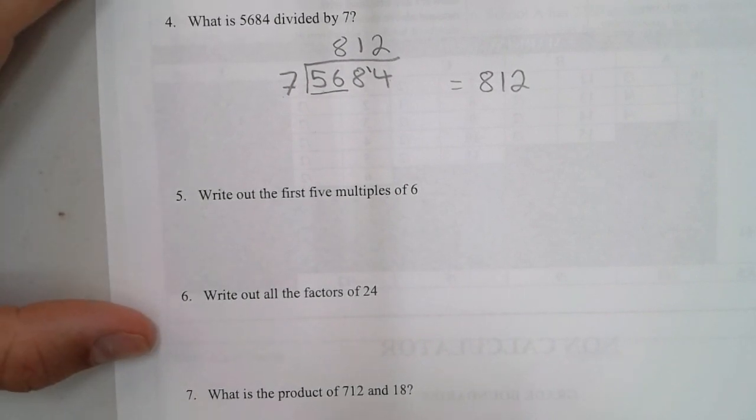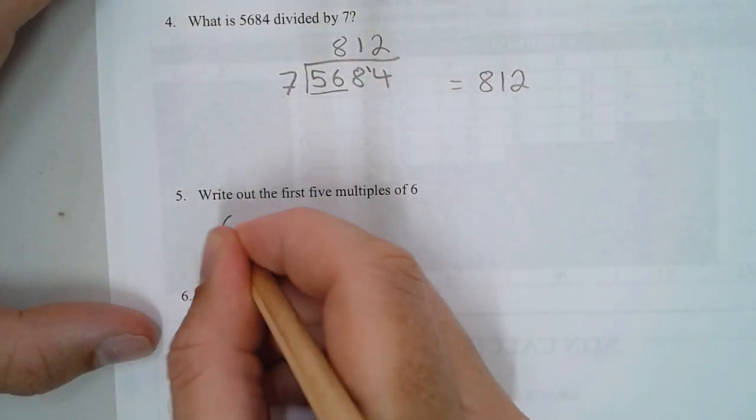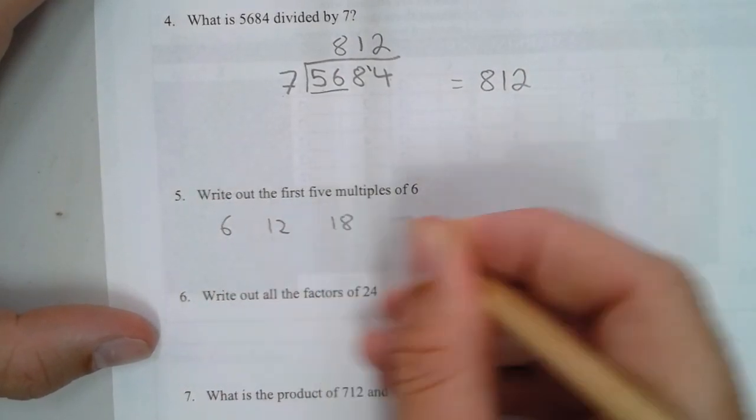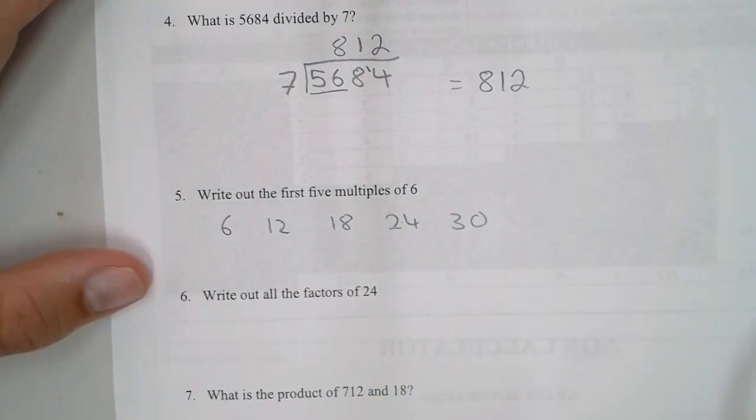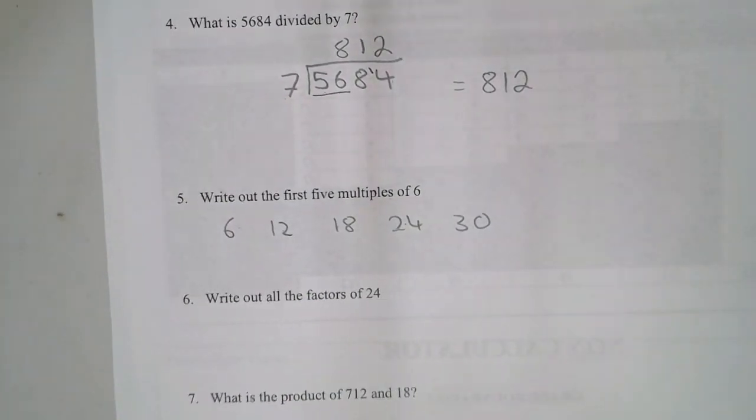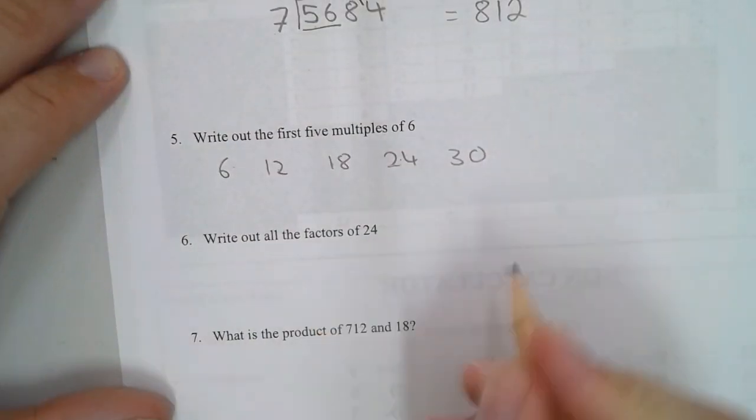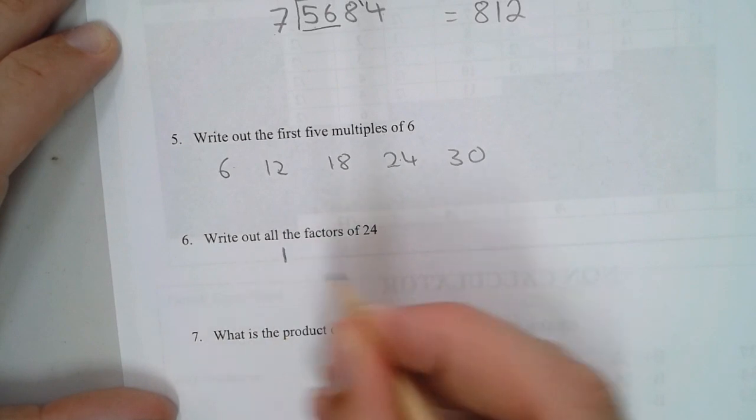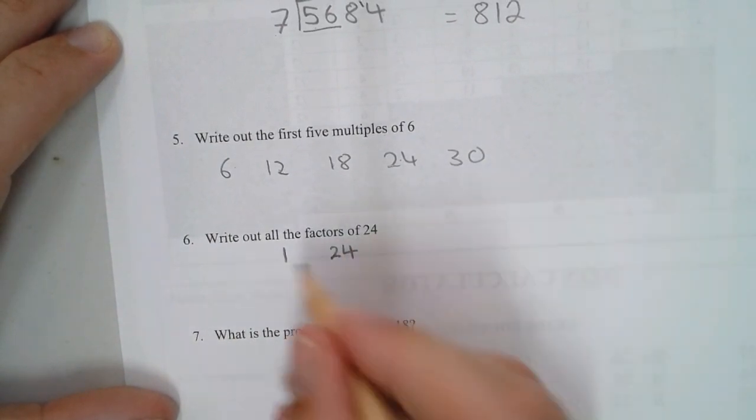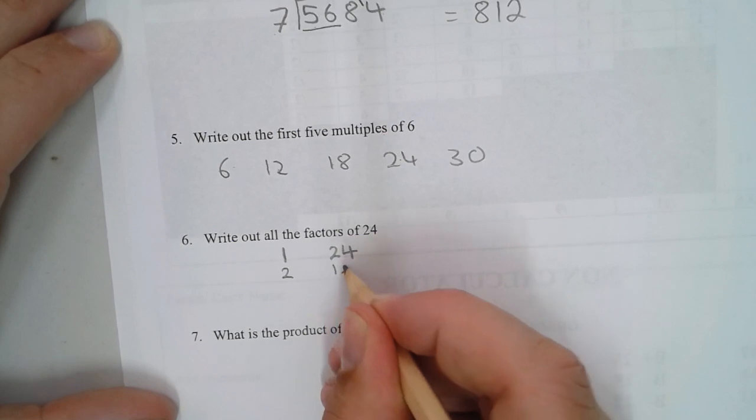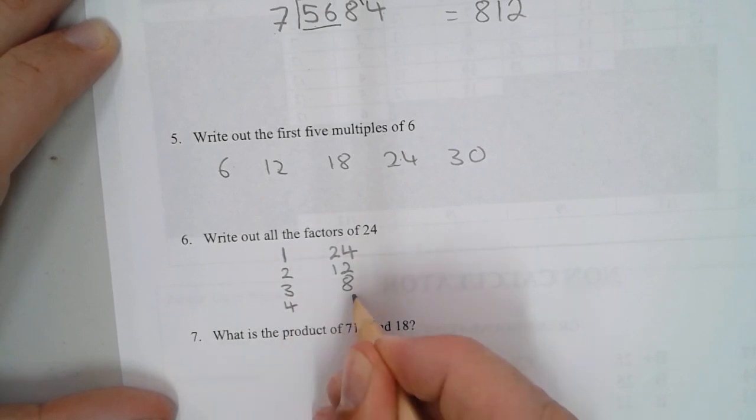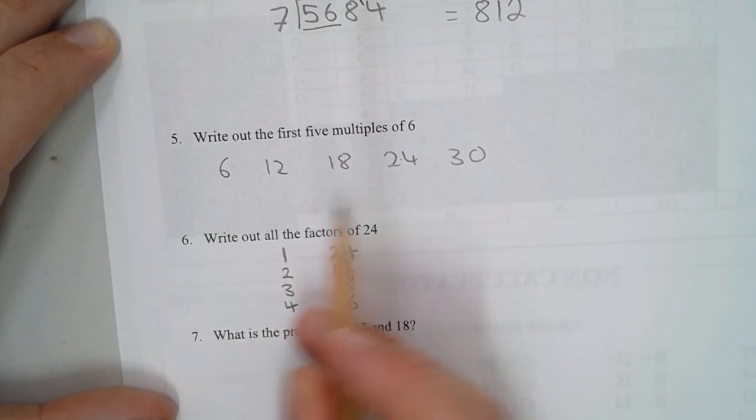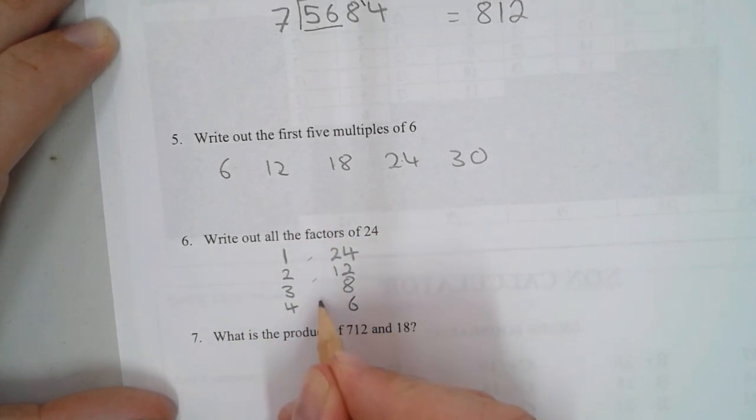7 can't go into 5, so we're looking at two numbers. 7 times 8 is 56, no remainder. 7 can go into 8 once with one remainder, and 7 can go into 14 twice. It goes in 812 times. Number five: write out the first five multiples of 6.